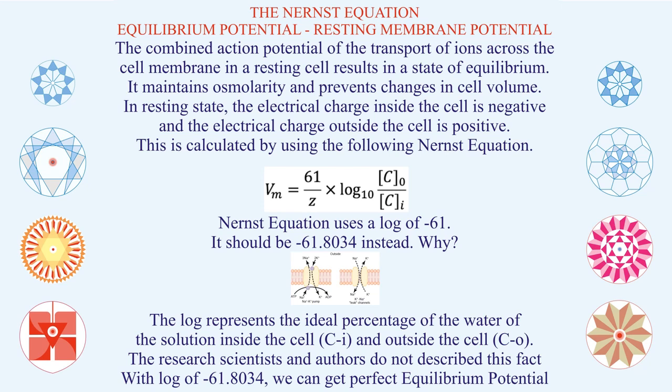Cells can be in a resting state or in action. At this juncture, let us not go to the action potential or local potential. Let us talk of equilibrium potential, or resting membrane potential, when the cell is at rest. The combined action of transport of ions across the cell membrane in a resting state results in equilibrium. When in action, equilibrium is not there — it could be more outside or more inside, and because of that difference, exchange is taking place.